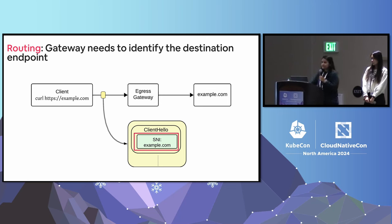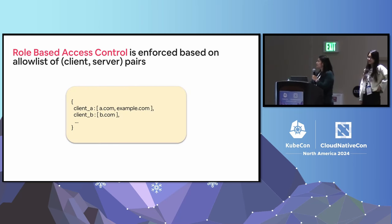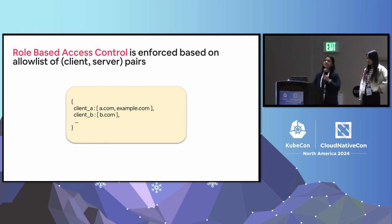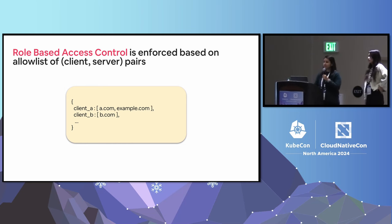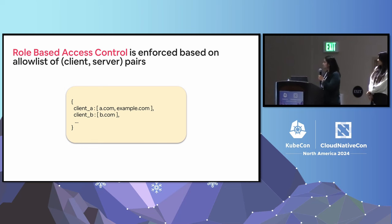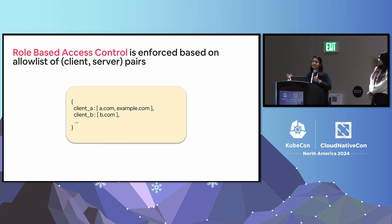The second key function — and my favorite — is RBAC, or role-based access control. Think of when you enter your company and are assigned an ID card: based on that identity, you are allowed access to certain resources while denied access to others. Similarly, at the egress gateway, RBAC means the gateway allows certain clients to access a fixed set of domains. For example, client A might be allowed access to a.com and example.com, while client B is allowed access to b.com. Any request not in the allow list will be denied. This is the feature that unlocks the defense-in-depth security model and makes our outbound traffic secure.